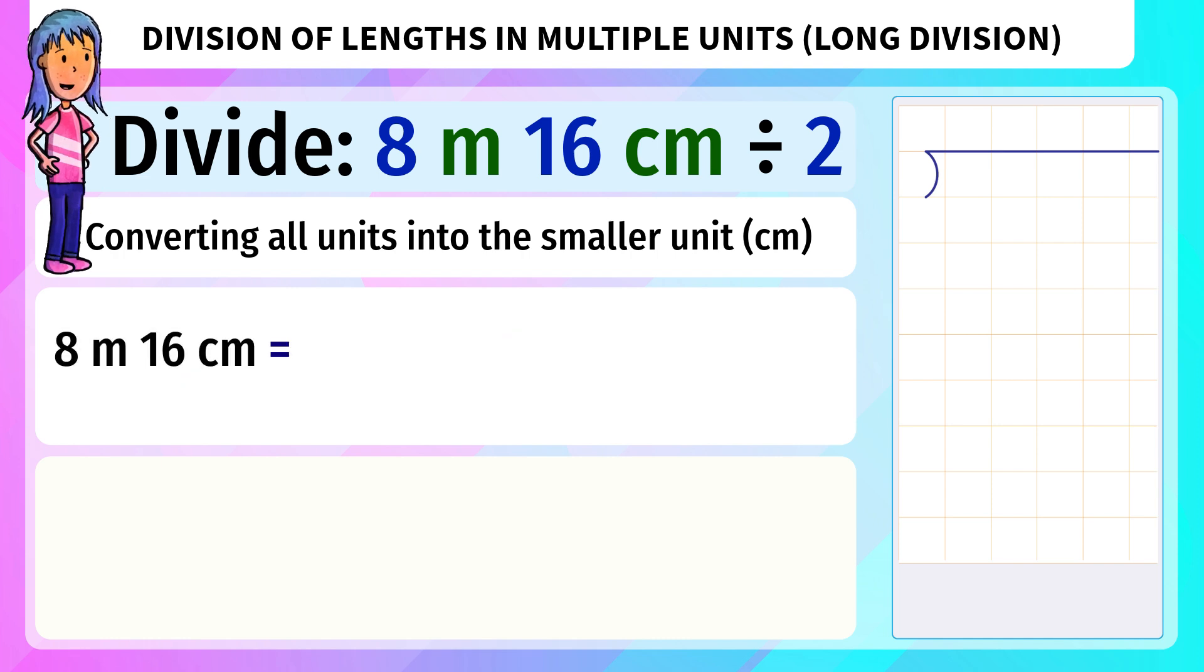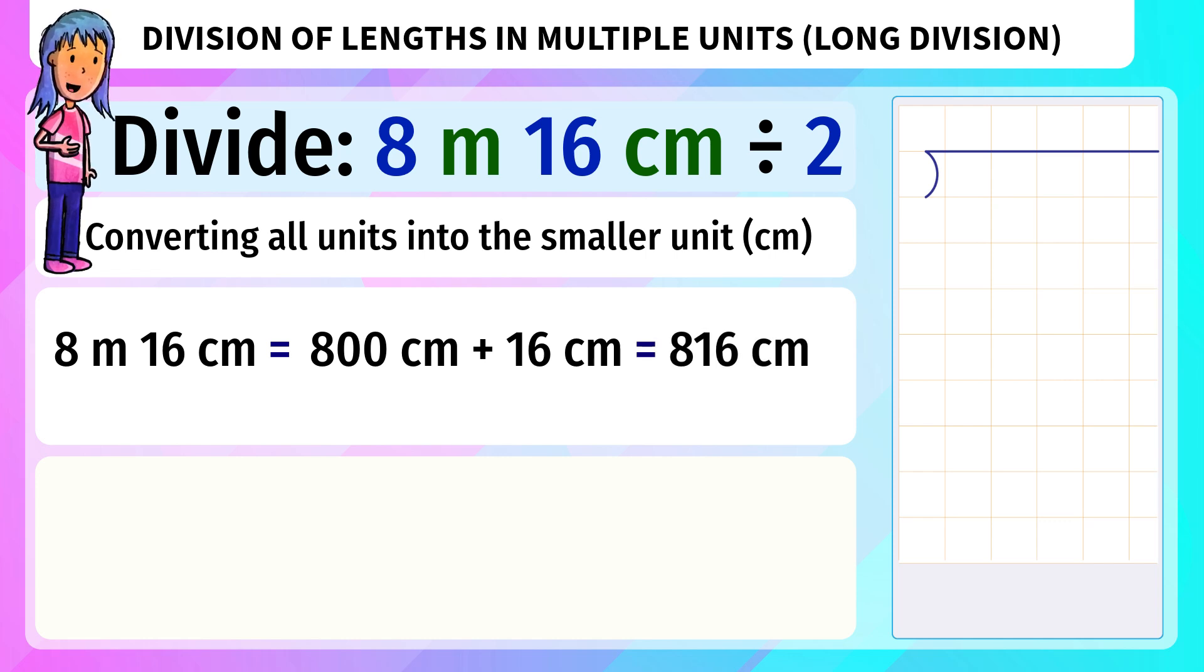Here, we convert meters into centimeters. 8 meters 16 centimeters equals 800 centimeters plus 16 centimeters, or 816 centimeters.